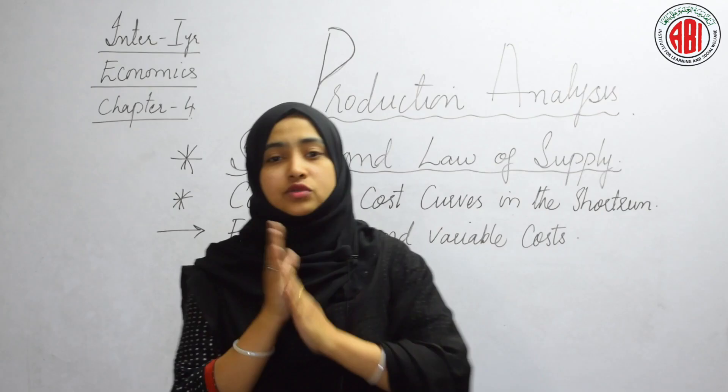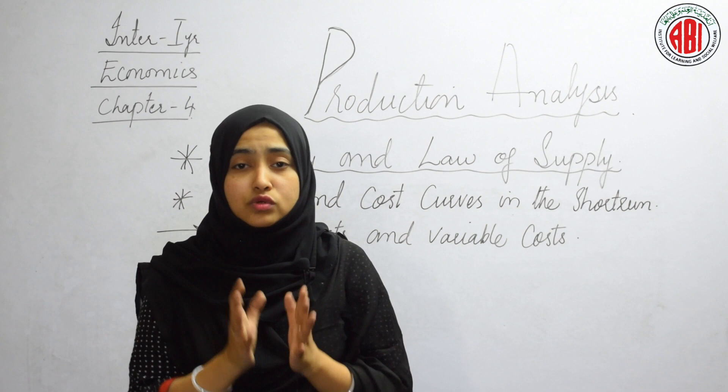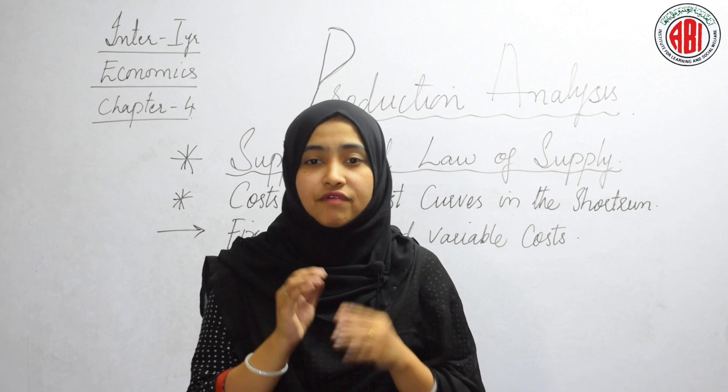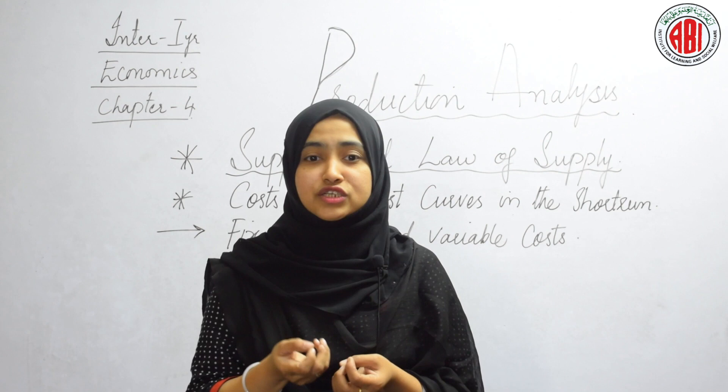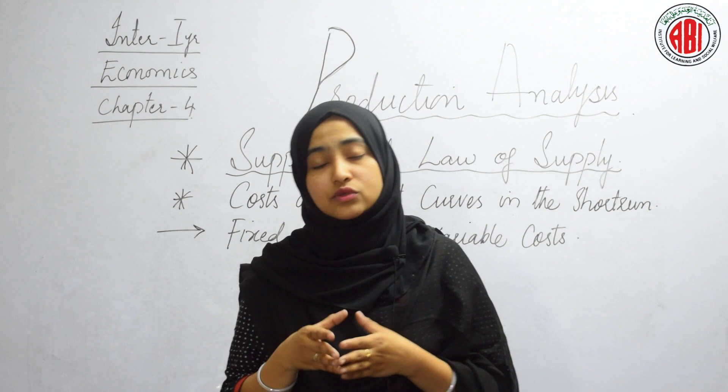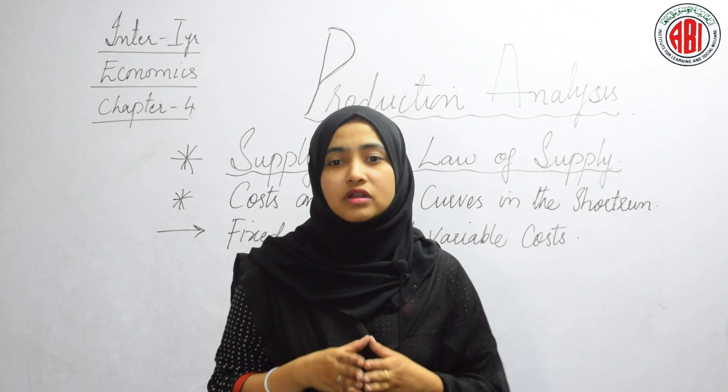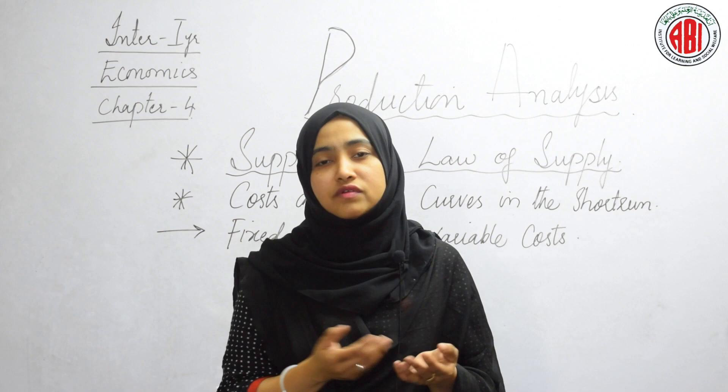On the other side, variable costs are those costs which change with the changes in the volume of output. When output is increased, variable cost also increases, and it diminishes when output is reduced. When production stops, variable cost becomes zero. Variable costs are called direct costs, and Marshall called these costs as prime cost.